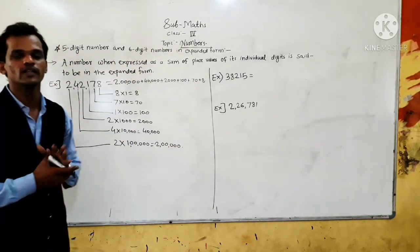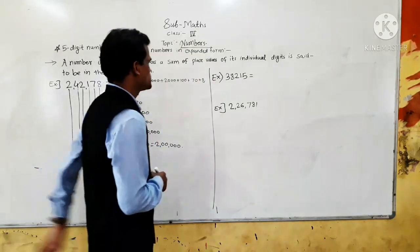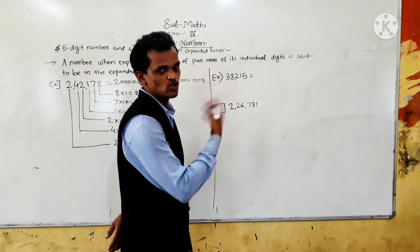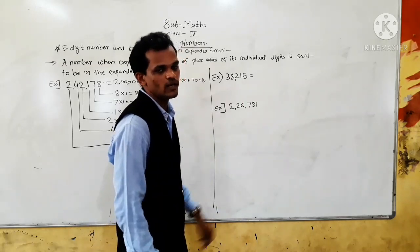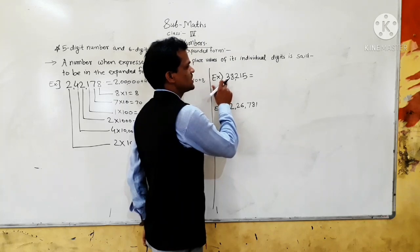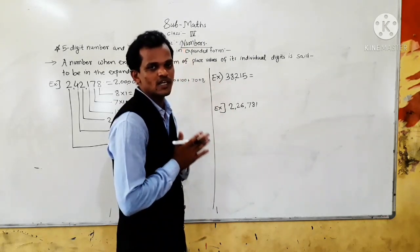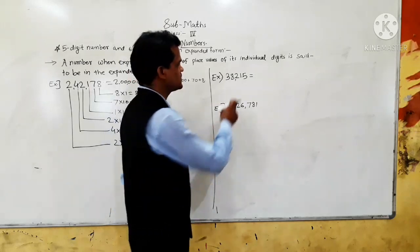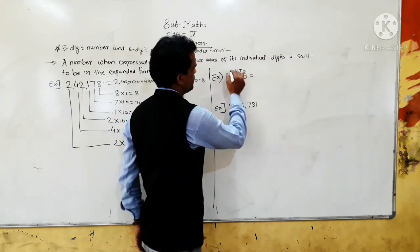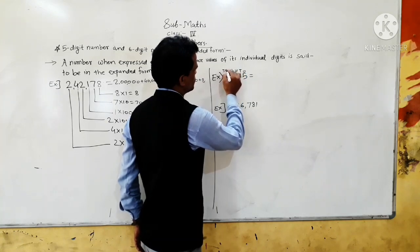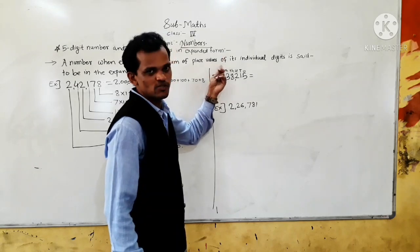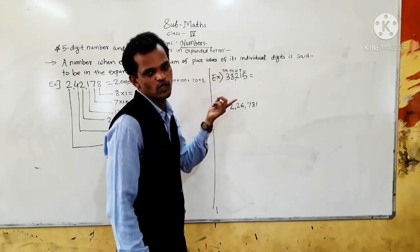Now see the next example. The number is 38,251. The place value of 3 is 30,000 because it comes at the ten-thousands place — counting: ones, tens, hundreds, thousands, and ten-thousands. So 3 comes at the ten-thousands place, meaning 3 × 10,000 = 30,000.